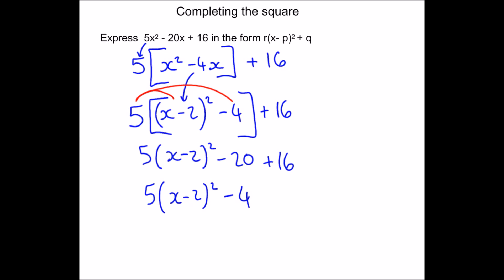Again we can use this to find the minimum point. The minimum is where the bracket equals zero — it can't be less than zero — and that's when x is 2. When x is 2 the bracket becomes zero, so we get 5 times 0 minus 4, giving a y-value of minus 4. So the same rules apply: change the sign of the number inside the bracket to get the x-coordinate, and leave the sign alone for the y-coordinate.